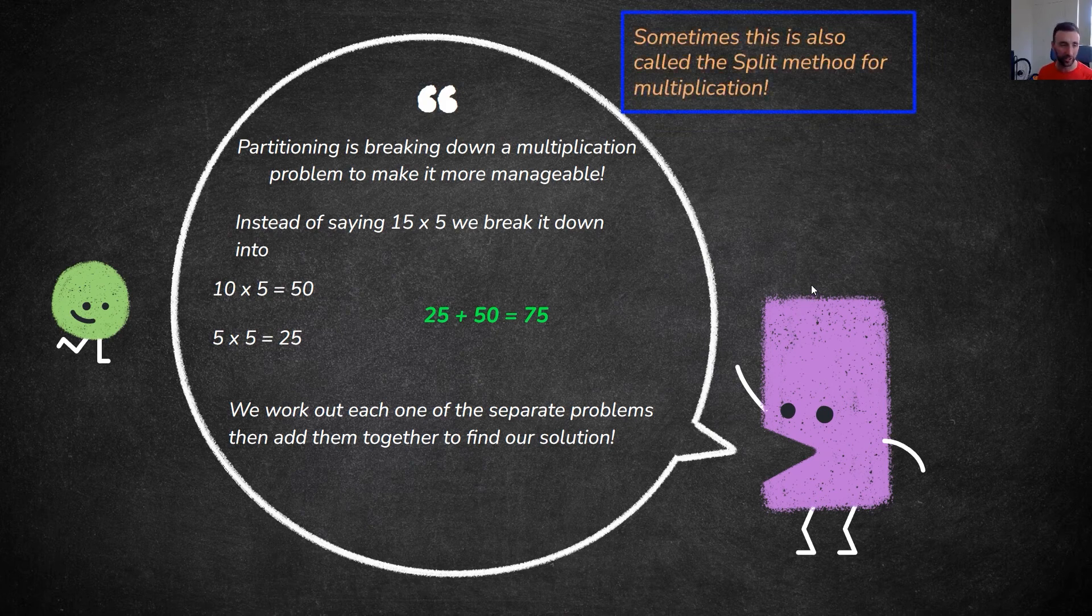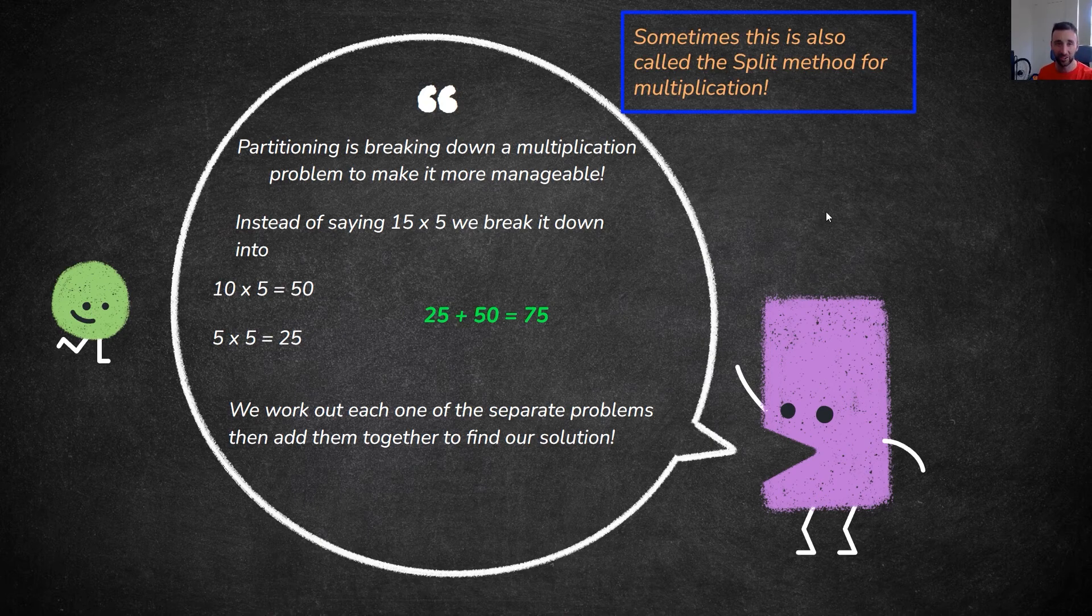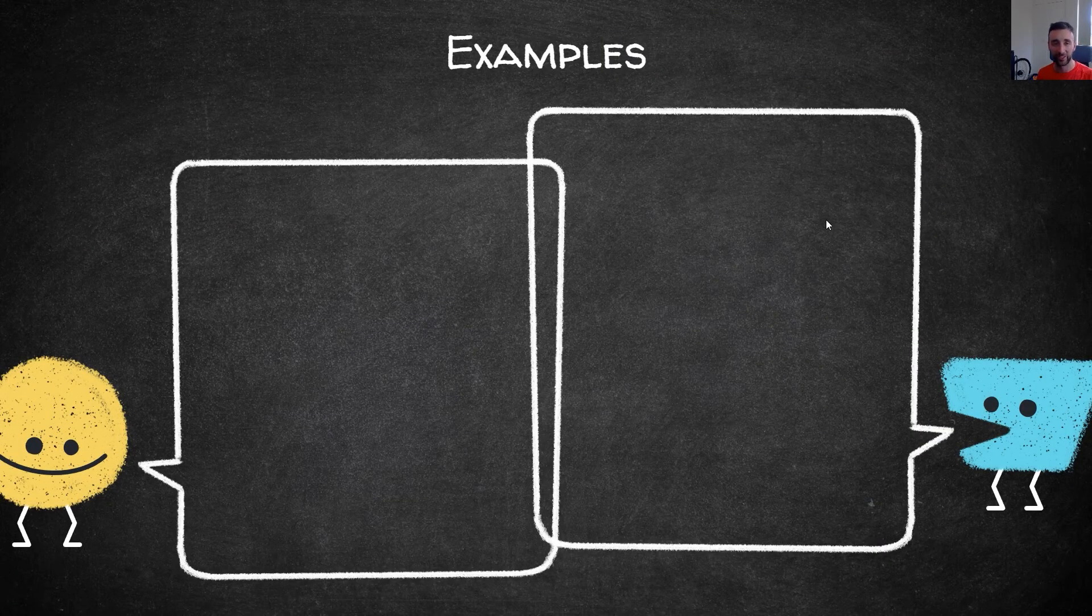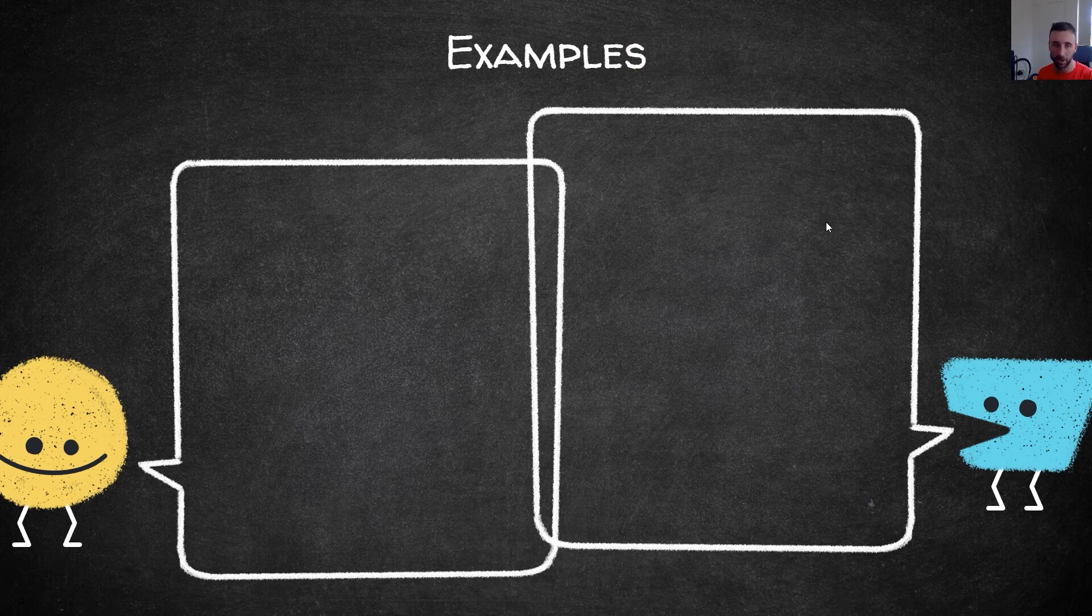It's a really good method and we're going to go through quite a few examples. You'll do some yourself before you get to hear your amazing joke. Here are the two examples we're going to start with, two digit by one digit.